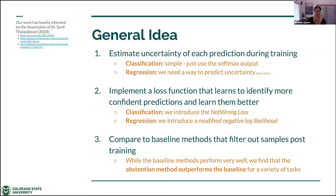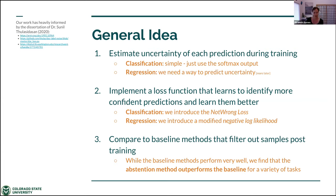First, we want to estimate the uncertainty of each prediction during training. We're focusing on both classification, which is well known in the machine learning community, but also regression, which is maybe less appreciated. In climate science and atmospheric science, regression is really mostly what we do, so it's very important that the tools we develop can be applied to regression problems. We'll implement a loss function that learns to identify more confident predictions, and compare this new abstention loss method to a more baseline method.